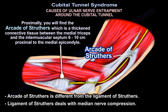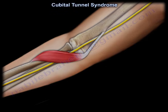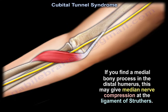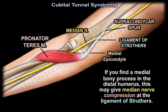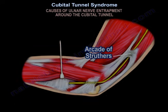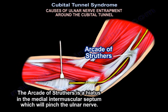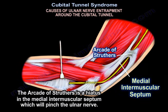The arcade of Struthers is different from the ligament of Struthers. The ligament of Struthers deals with median nerve compression — if you find a medial bony process in the distal humerus, that may cause median nerve compression at the ligament of Struthers. The arcade of Struthers makes a hiatus that pinches the ulnar nerve, as you can see here.